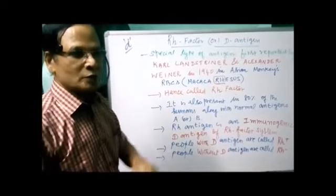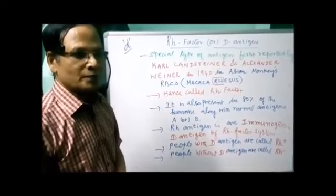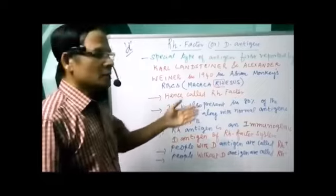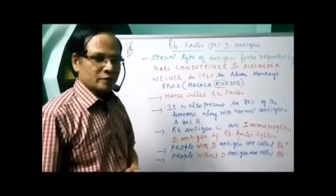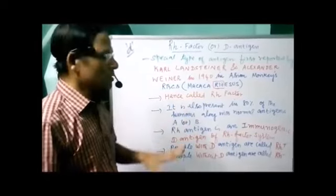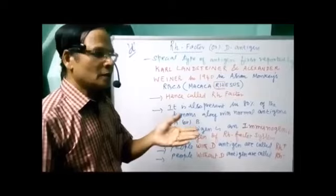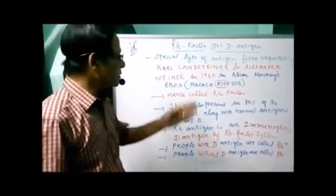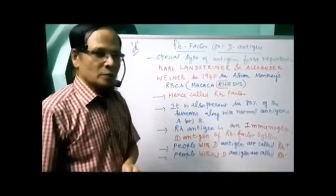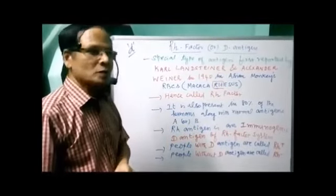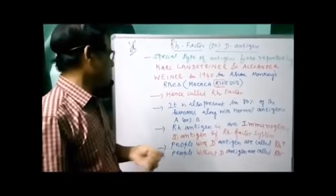So this is the most common type — 80% of individuals are Rh positive in nature. The most abundant blood group is Rh positive. The least abundant blood group is Rh negative. Generally speaking, the most abundant blood group is the positive blood group.